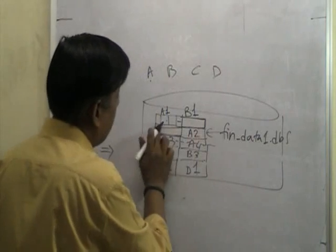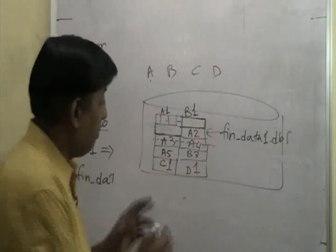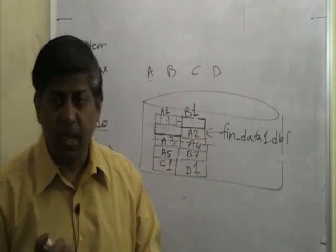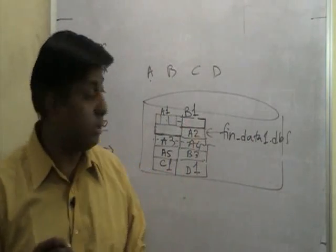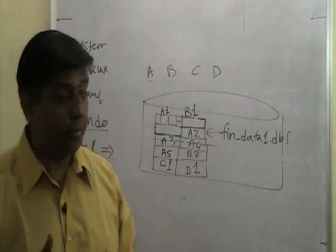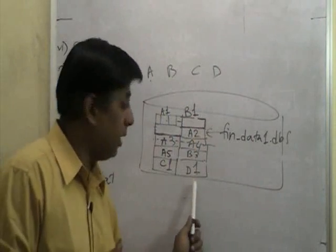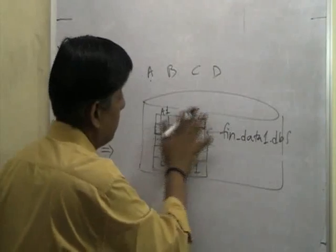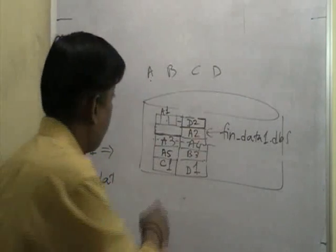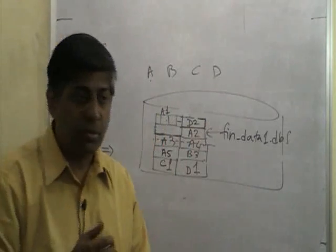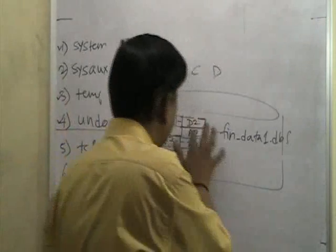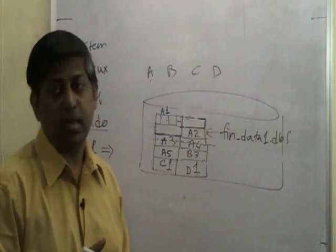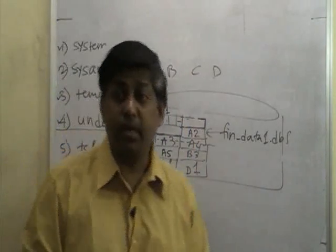Now, what if table B is dropped? That particular area - both extents - are now free, nothing is there. So within this tablespace, which was earlier one gigabyte in size, two extents are now free. Somebody comes and says they'd like to insert more data into segment D - D1 is full, so D2 will come in one of these free spots. As you drop more and more tables, holes get created in your data file or tablespace - this is what fragmentation is.